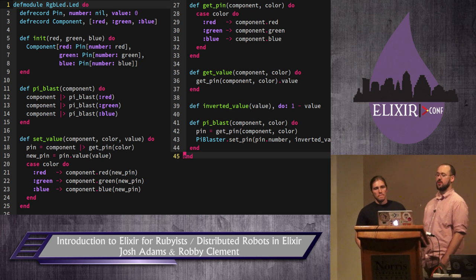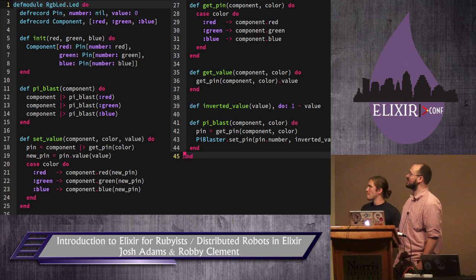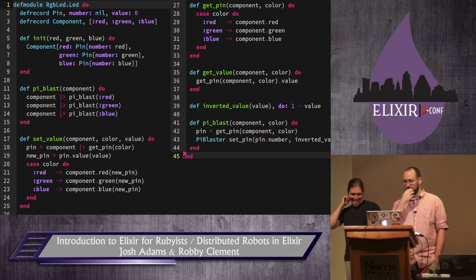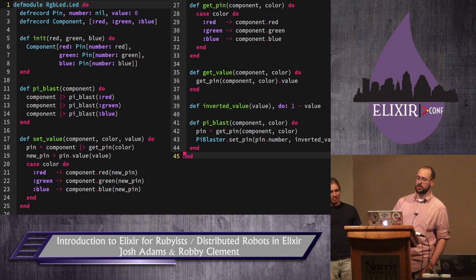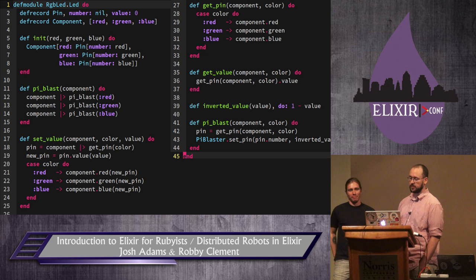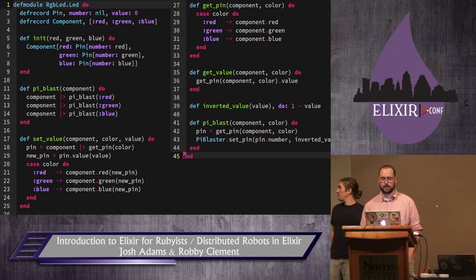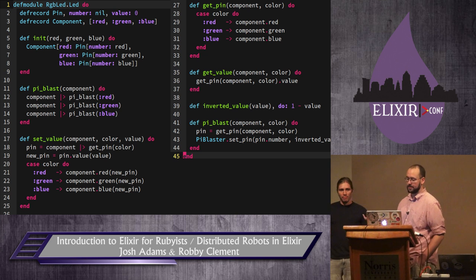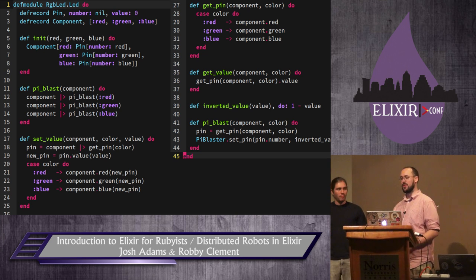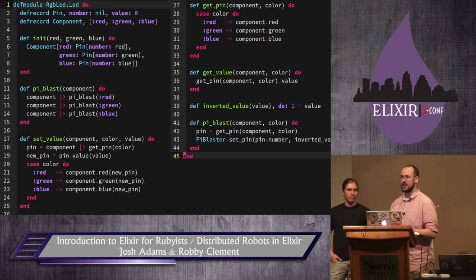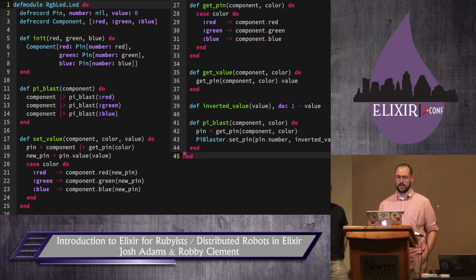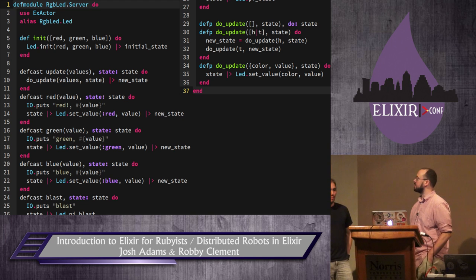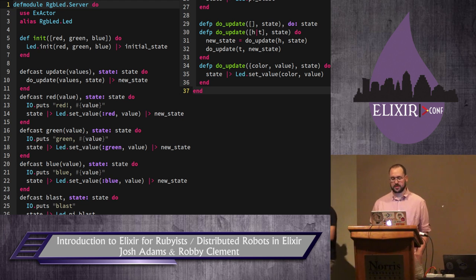Here's a basic module representing our RGB LED. This is a stateless module that uses a couple of records to represent a single pin and the full RGB LED component. The init function generates a component representing the LED, and it supports a set_value function and a pi_blast function. When we pi_blast, we actually invert the value — when you deal with hardware, you have quirks. The RGB LED we got was common cathode, so we had to modulate ground in the reverse of what you wanted to make it turn on at the intensity you desired. We wrap that up with a basic GenServer exposed via Erlang distribution.